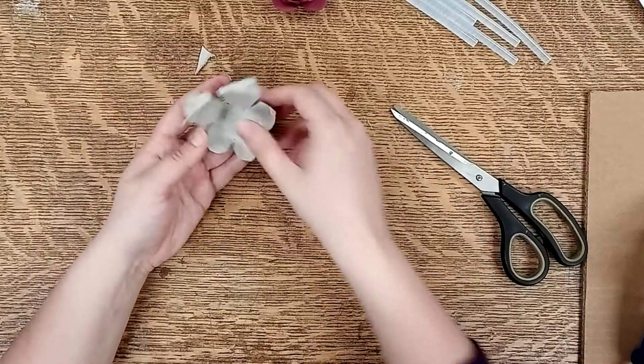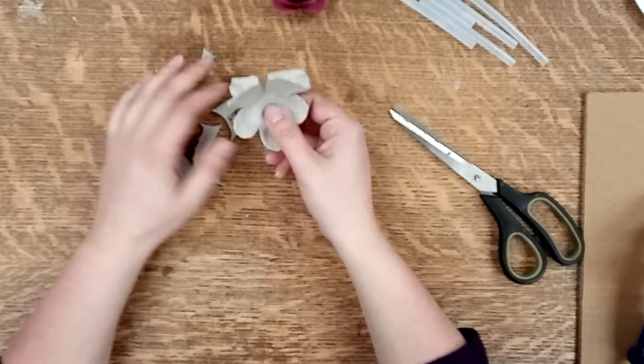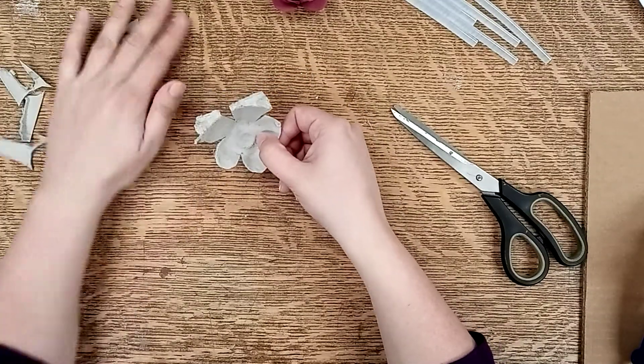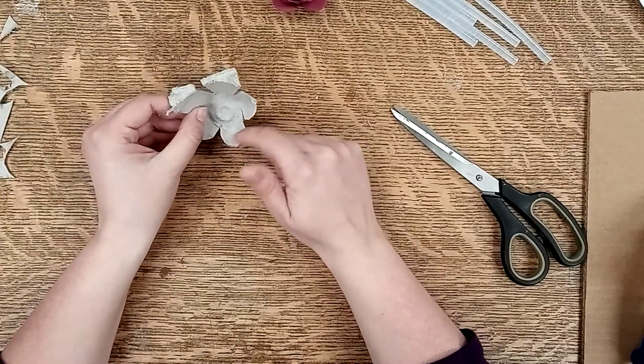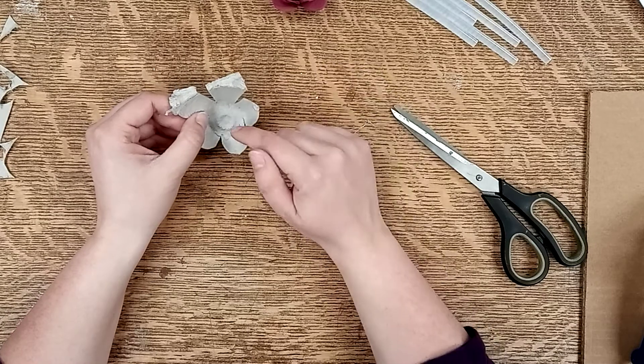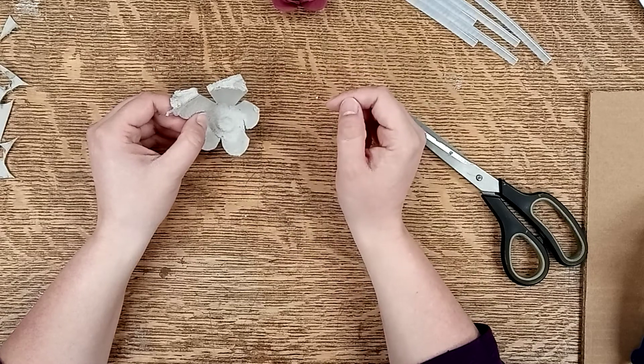And then once you've got all five cut out you want to paint your egg cup so that you can get into all of the little crevices before you put your rose together.